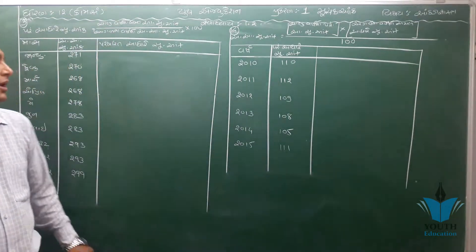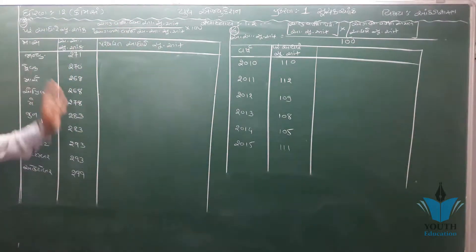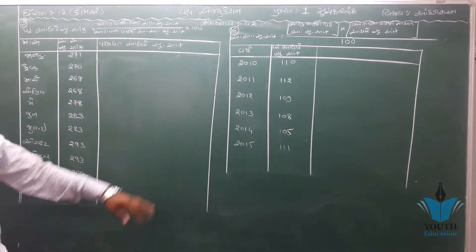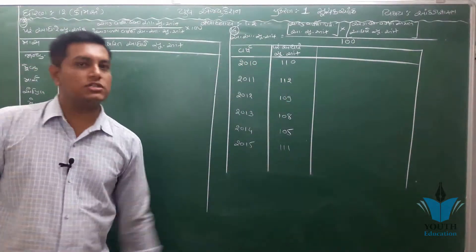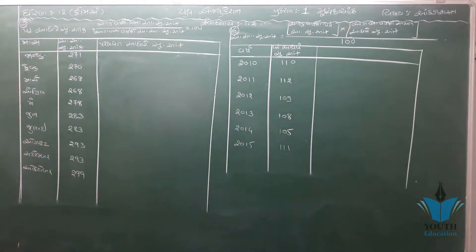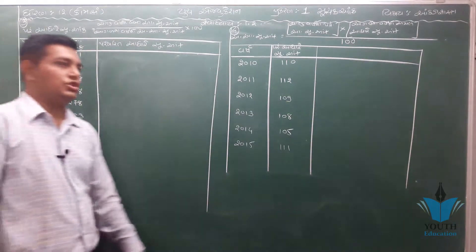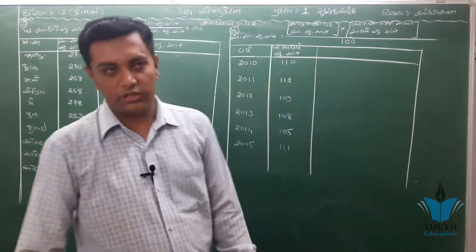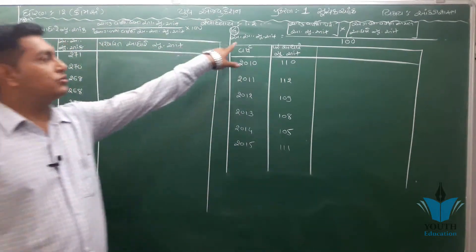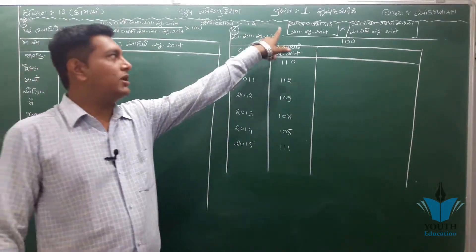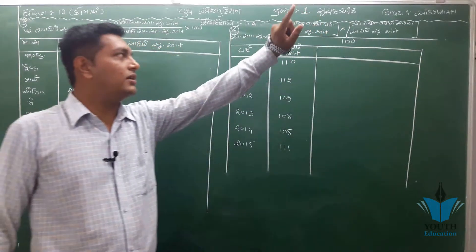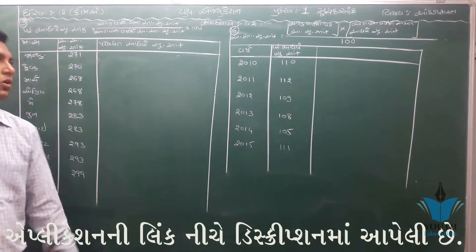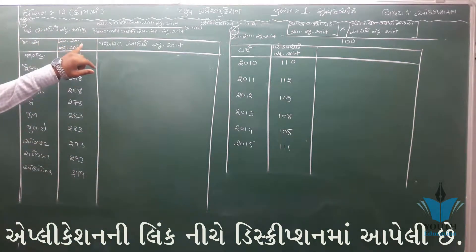પ્રશ્ન ત્રણ માં આપડે અચલ આધારના સૂચકાંક આપિ દીધા છે, તેના ઉપરથી આપડે પરંપરિતના સૂચકાંક મેળવાના છે. જ્યારે પ્રશ્ન ચાર માં આપડે પરંપરિતના સૂચકાંક આપિ દીધો છે, તેના ઉપરથી આપણે અચલ સૂચકાંક મેળવાનો છે.